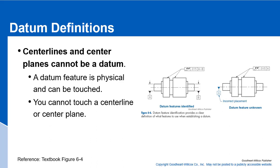Datum definitions: center lines and center planes cannot be a datum. A datum feature is physical and it can be touched — you cannot touch a center line or a center plane. Here we have these datum features identified: datum A is a cylindrical feature of size, datum B is another cylindrical feature, and then we have a runout tolerance of 15 thousandths to those datums established by these two features. These datum features are physical — they're on a part.